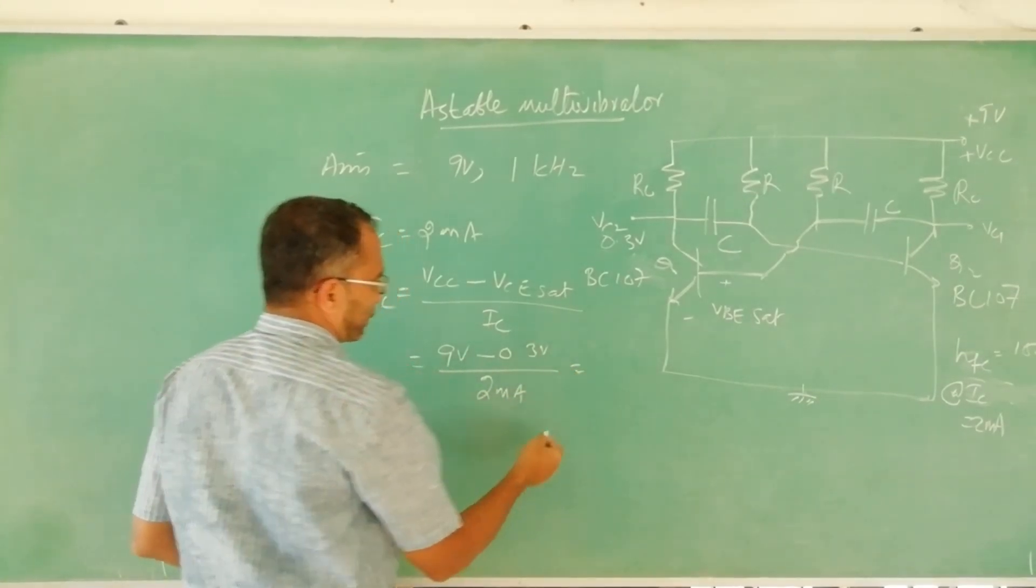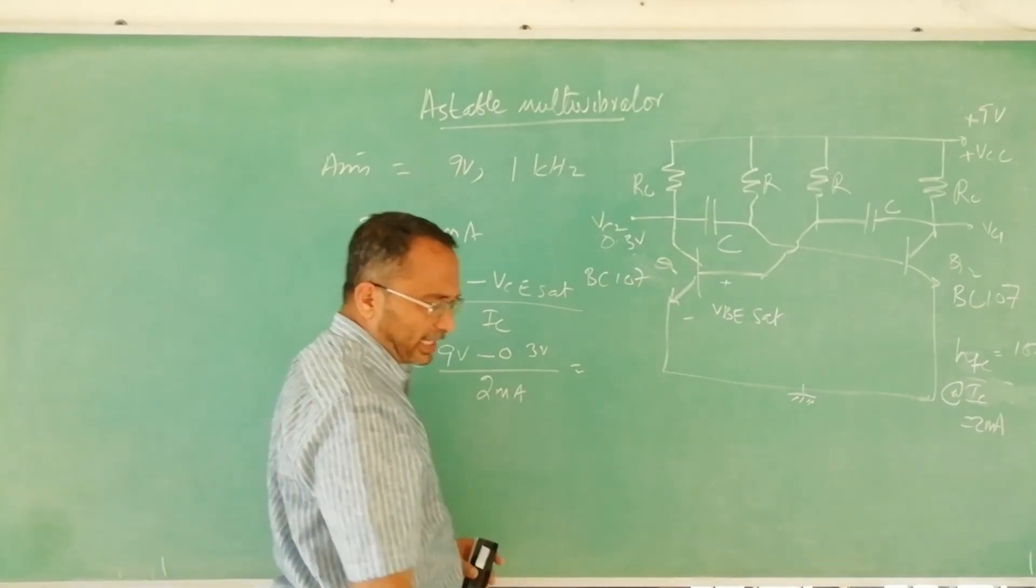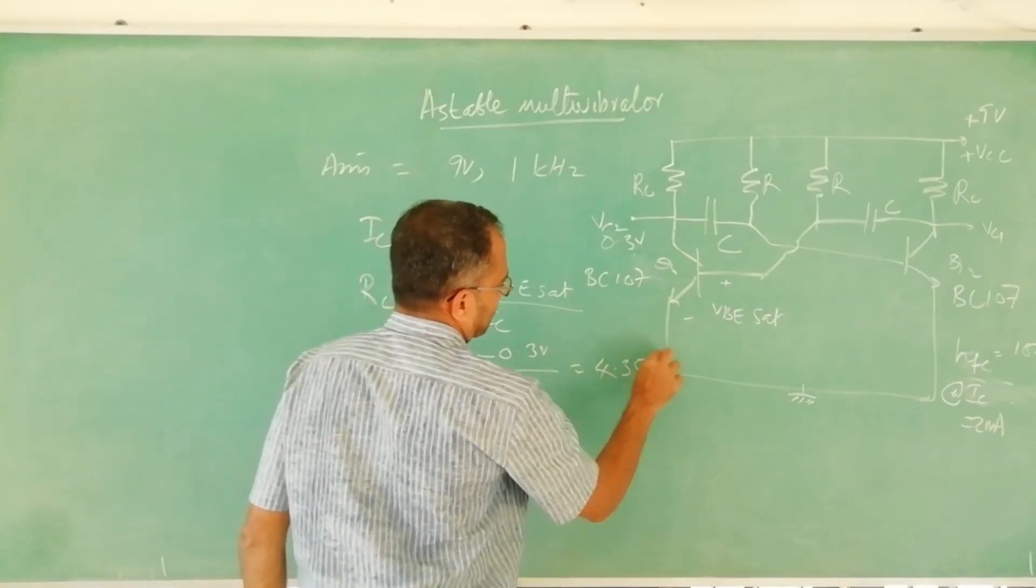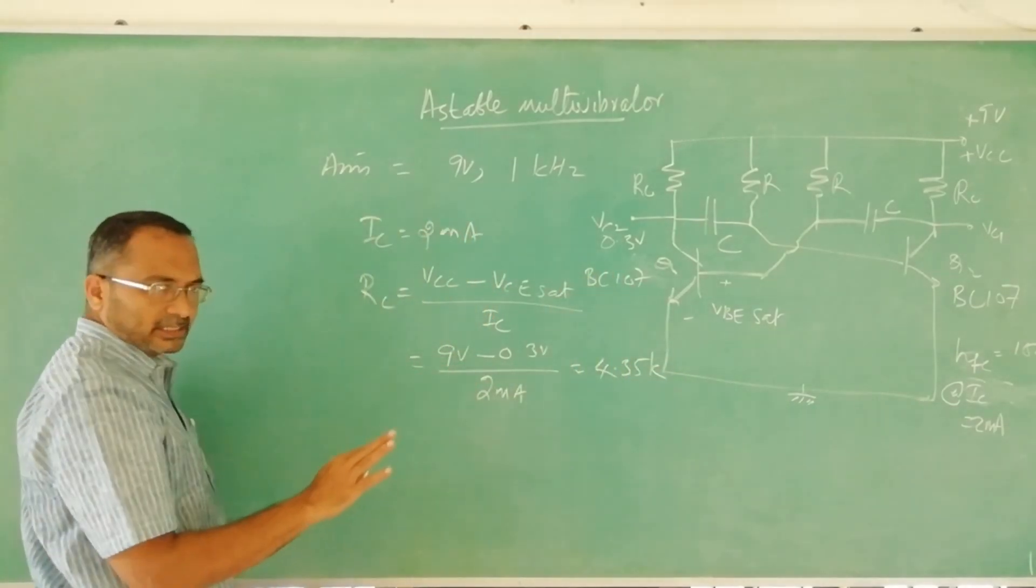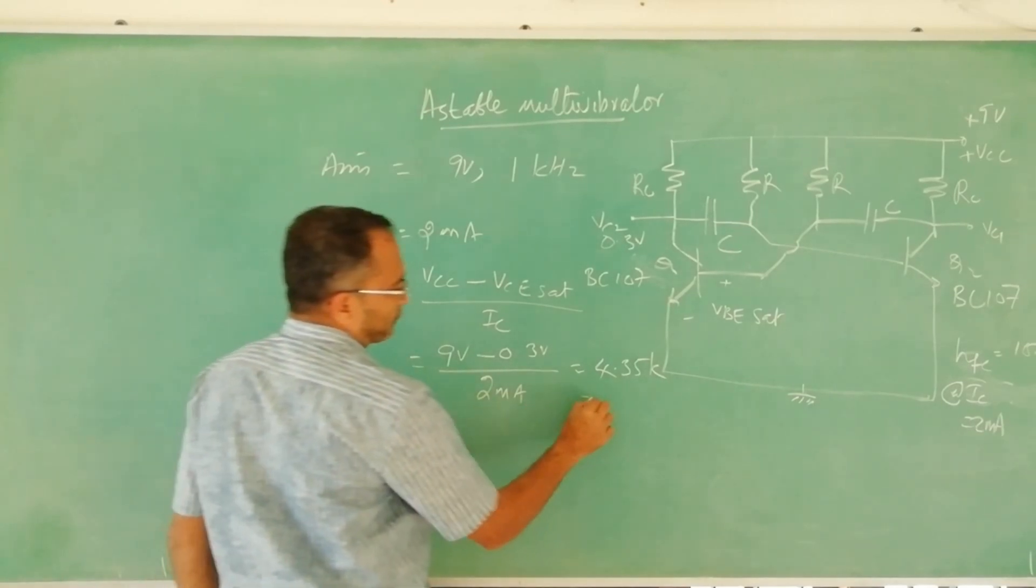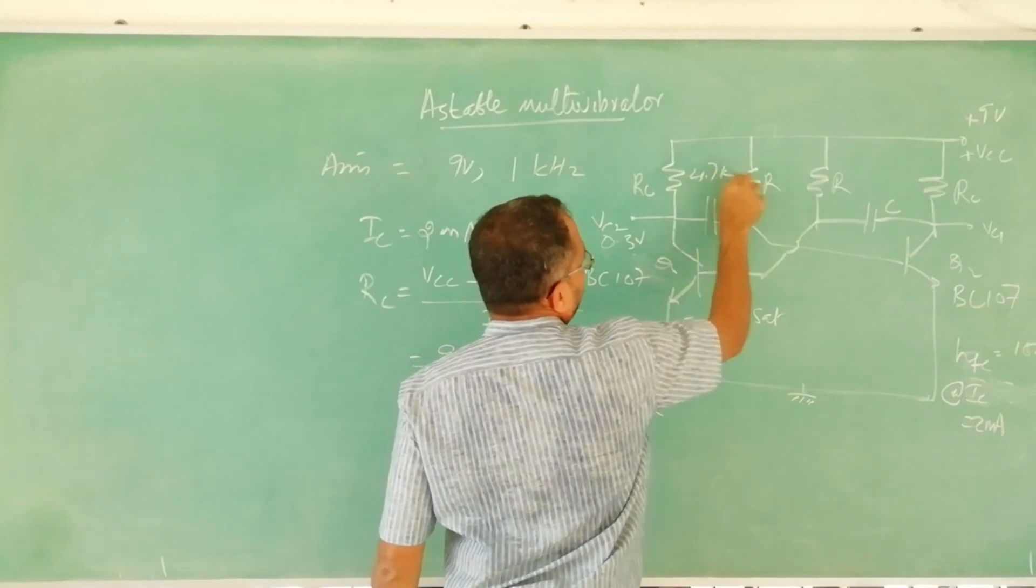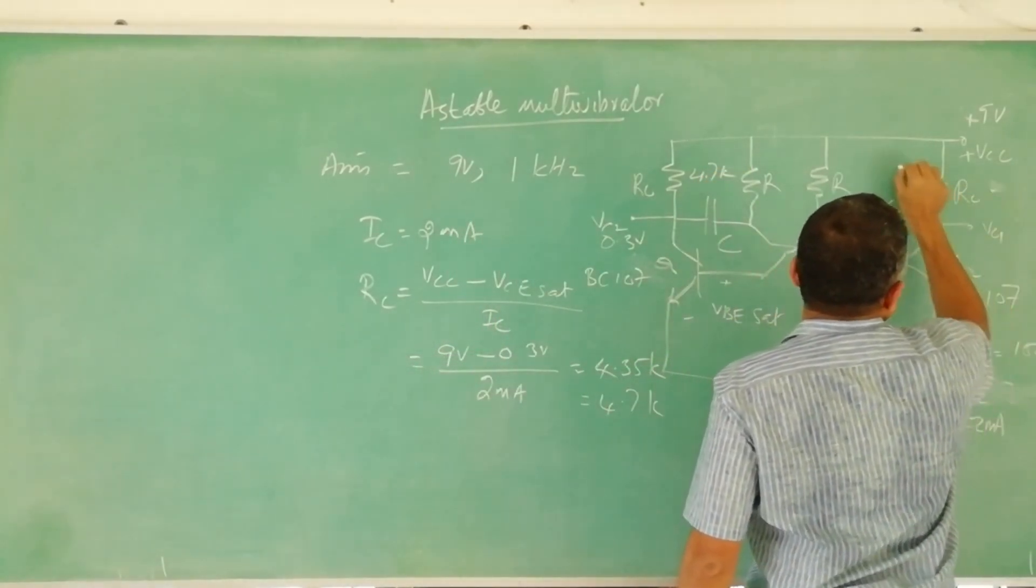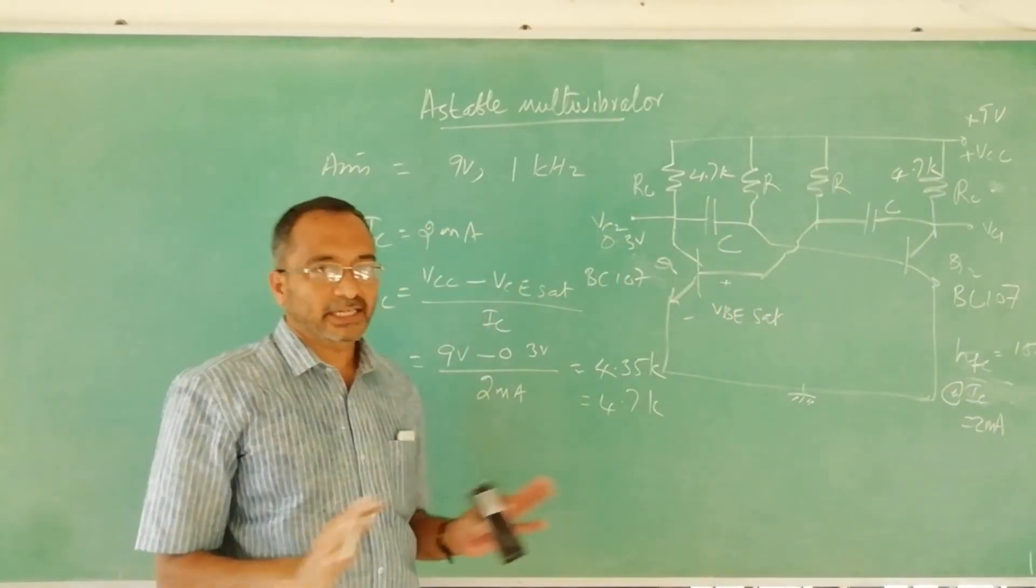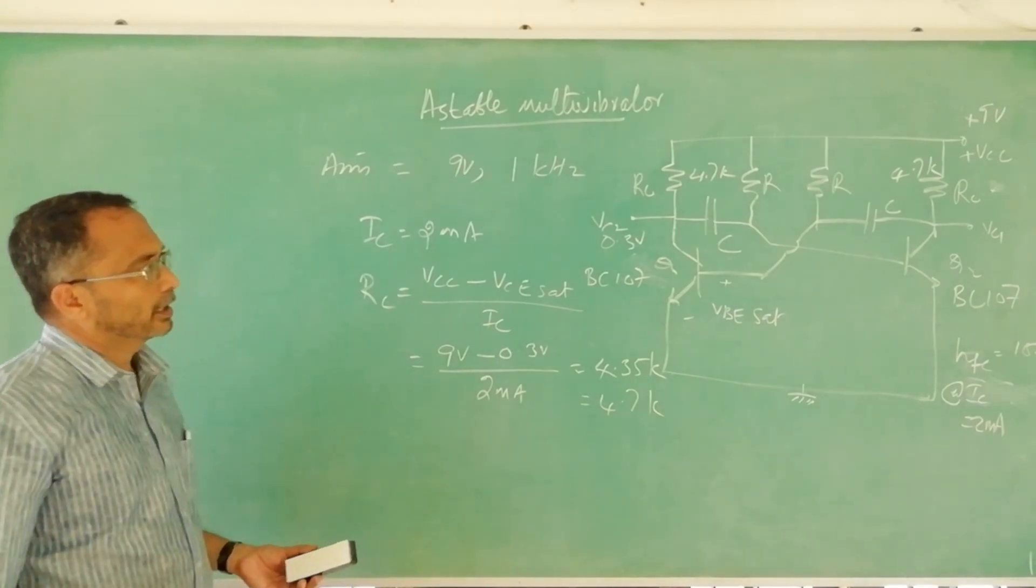This will work out to approximately 4.35k. Since the 4.3k resistor is not available we can select a standard value of 4.7k. So we should use 4.7k here, 4.7k here. So we designed RC.